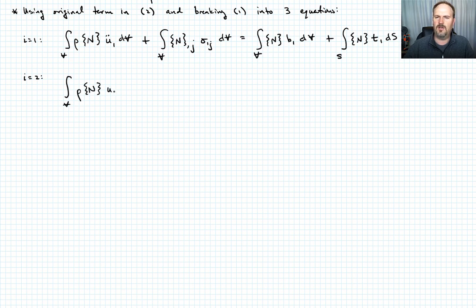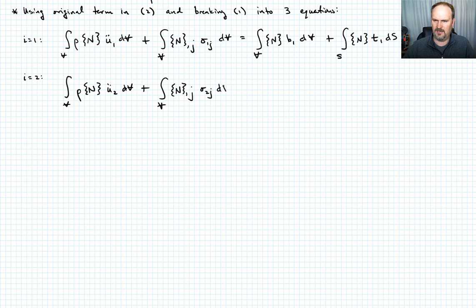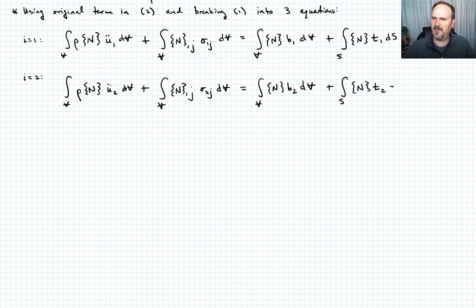For i equals 2: integral over the volume of rho N u2 double dot dV, plus integral over the volume of N partial with respect to x_j of sigma_2j dV, equals the integral over the volume of N times b2 dV plus the integral over the surface of N times t2 dS. Note: the partial here is with respect to x_j, but recall that in the previous lecture interpolation functions were given in natural coordinates xi, eta, zeta — we'll reconcile that in future lectures.